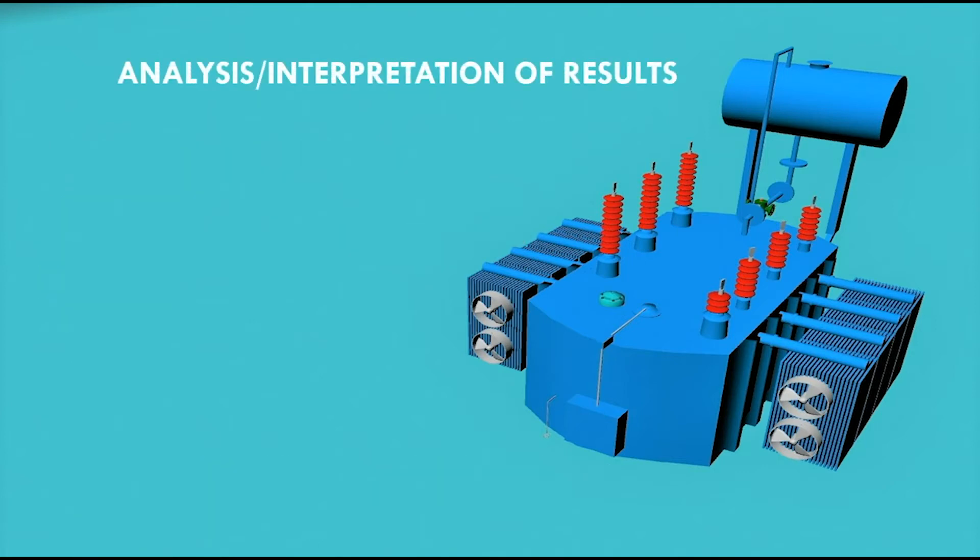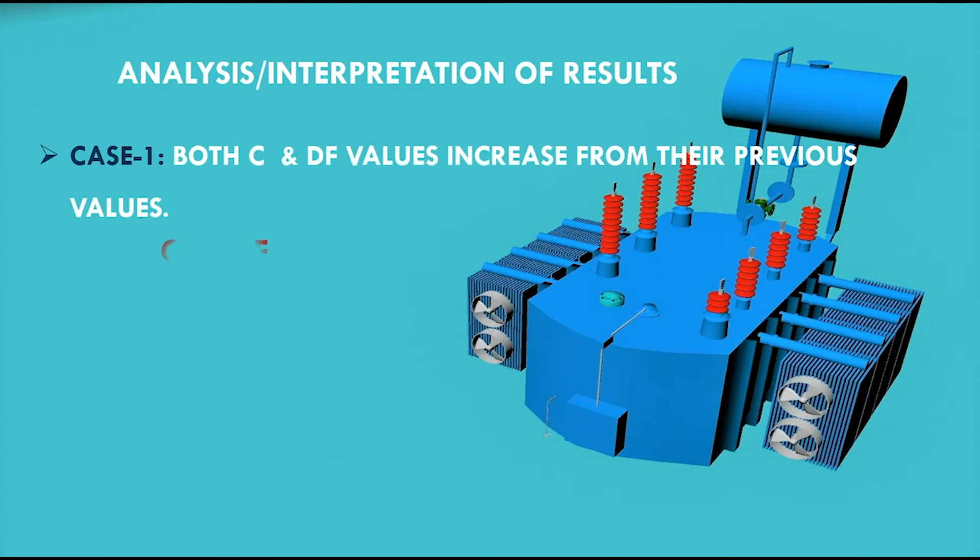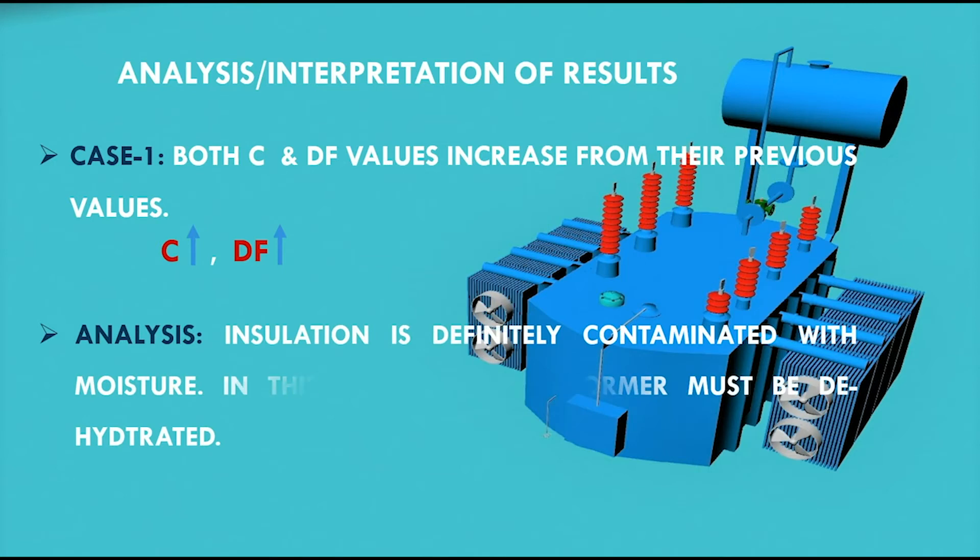Now we come across the analysis and interpretation of the results that we obtained from the C and DF test. We consider the first case when both C and DF values increase from their previous values. It means that insulation is definitely contaminated with moisture. In this case, the transformer must be dehydrated.